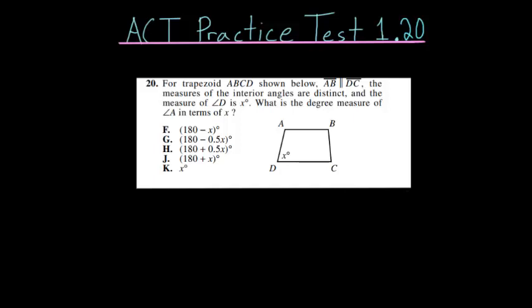The 20th problem on this first ACT practice test focuses on the properties of parallel lines. For trapezoid ABCD shown below, lines AB and DC are parallel, so AB and DC we can mark as parallel lines. The measures of the interior angles are distinct, and the measure of angle D is X degrees.